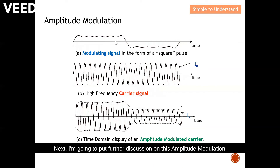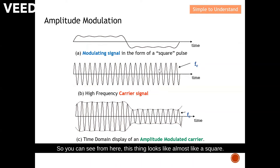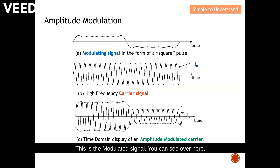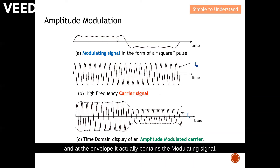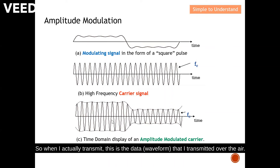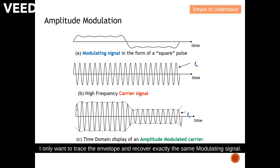Now I'll provide further illustration on amplitude modulation using a square pulse as the modulating signal. You can see this modulating signal looks almost like a square. The carrier doesn't carry any information at this point. In the modulated signal, you can see it has exactly the same frequency as the carrier, and at the envelope it actually contains the modulating signal. So when I transmit, this is the data sent over the air. I'm not keen to recover this modulated signal — I only want to trace the envelope and recover exactly the same modulating signal. This is amplitude modulation.